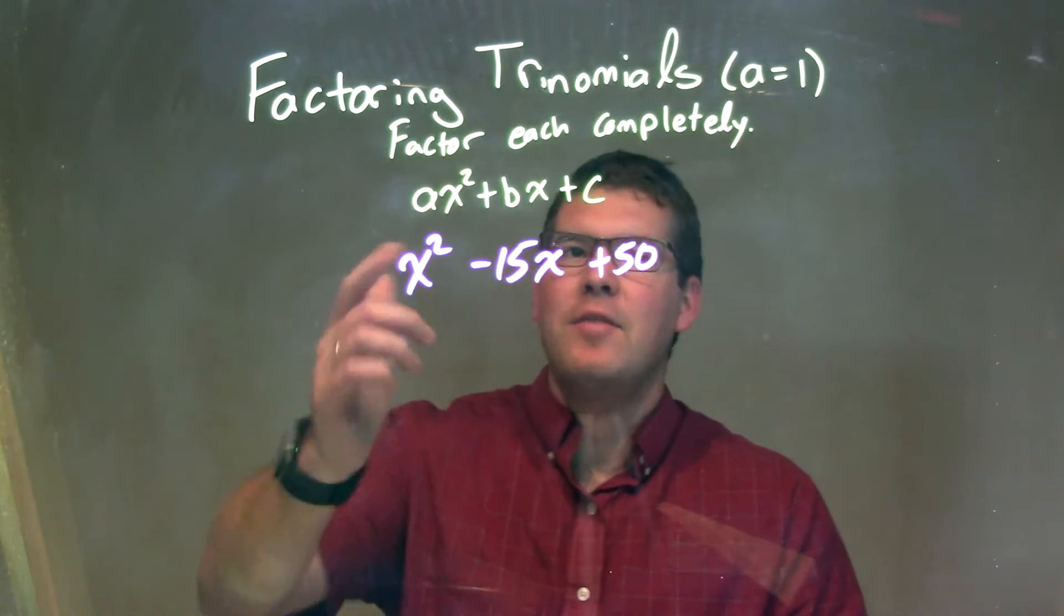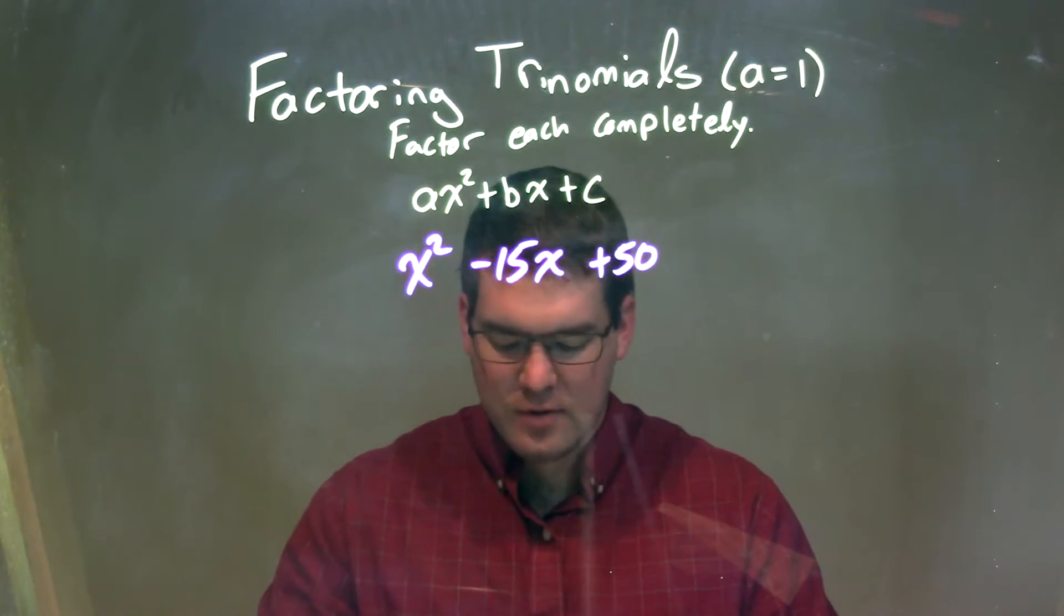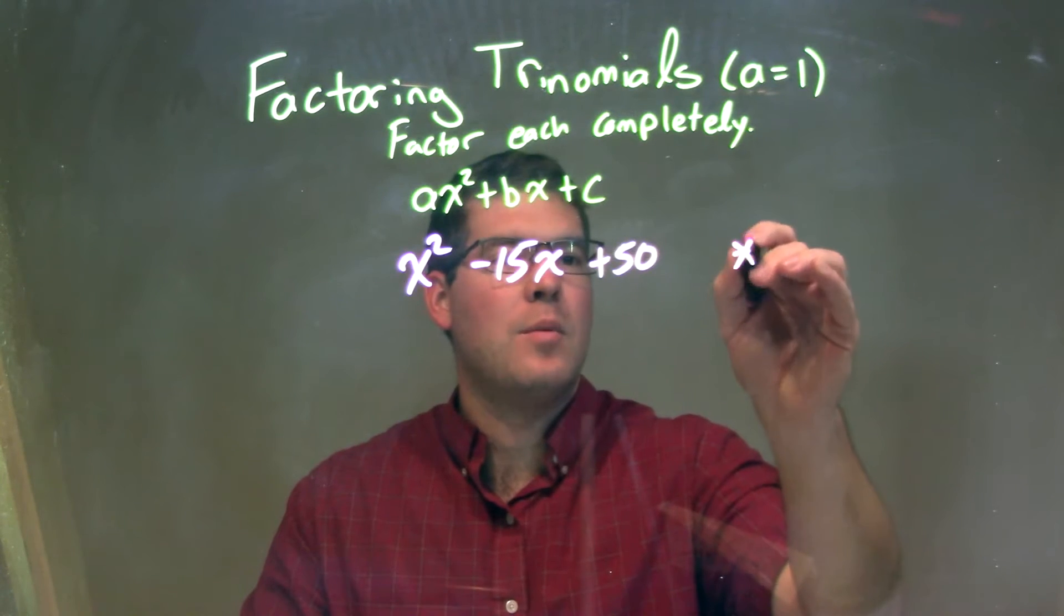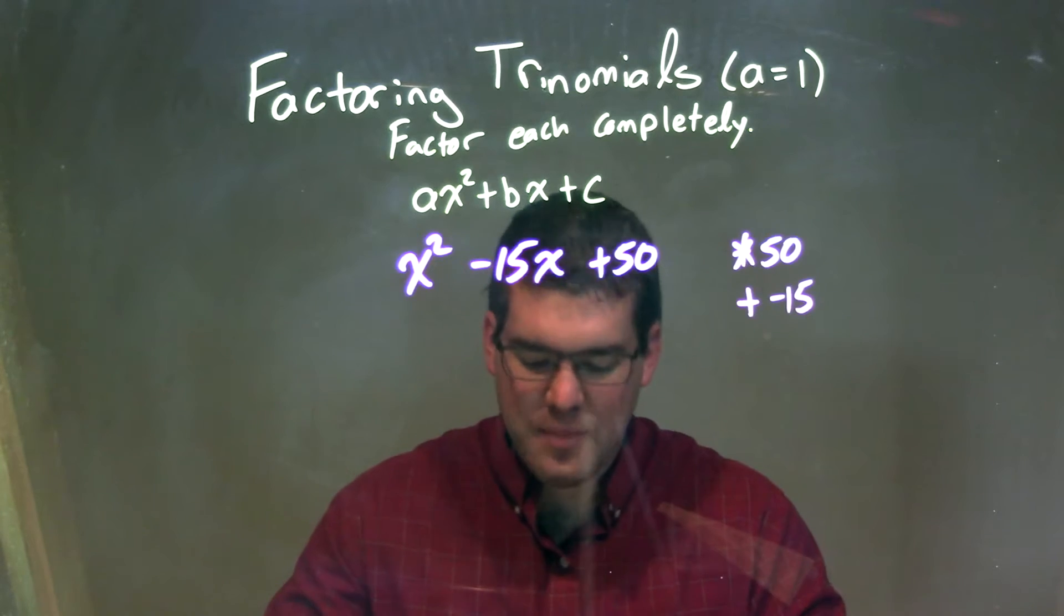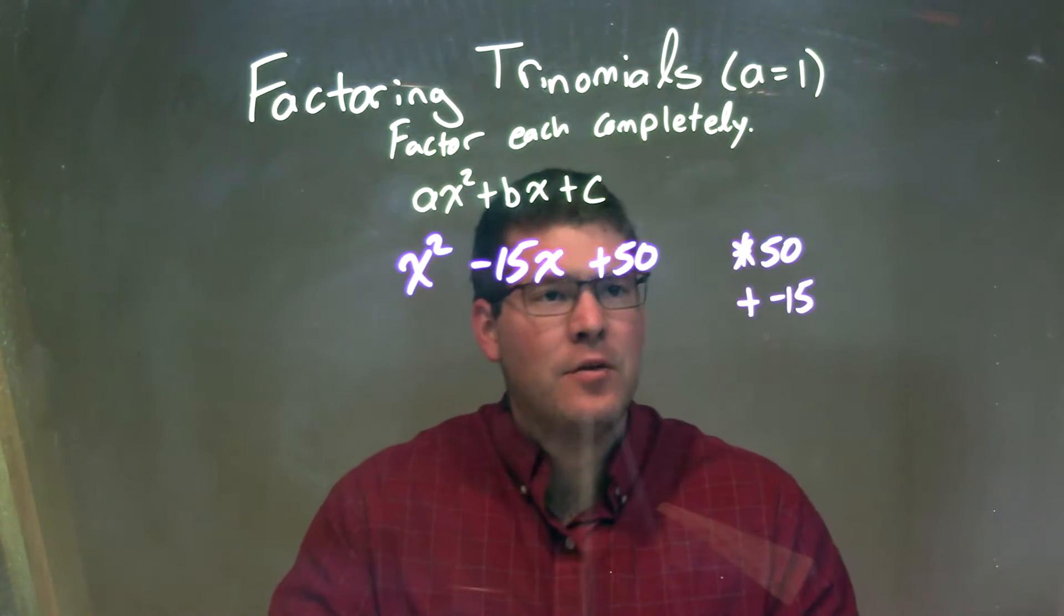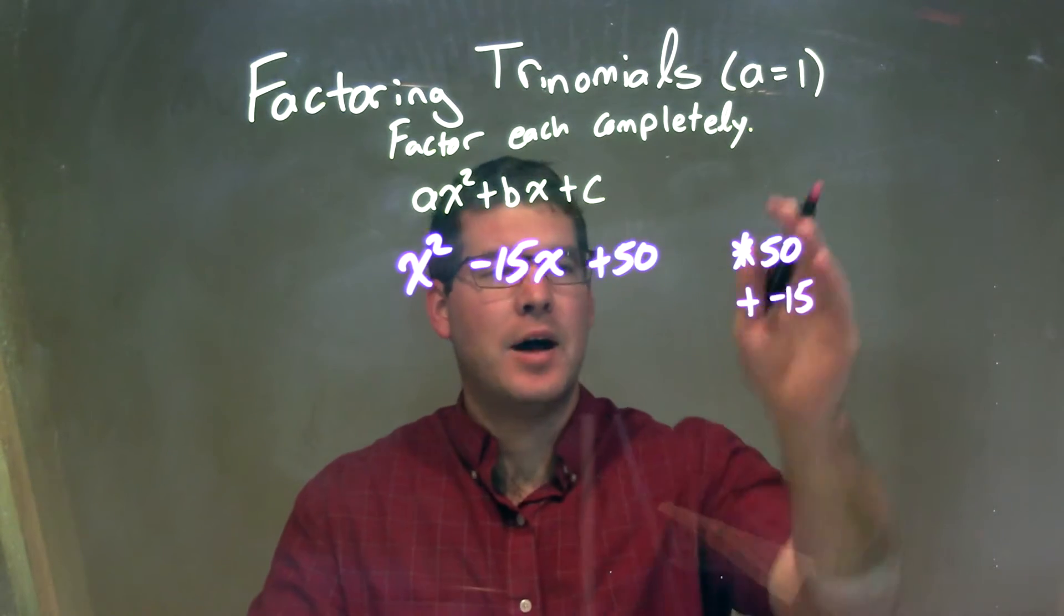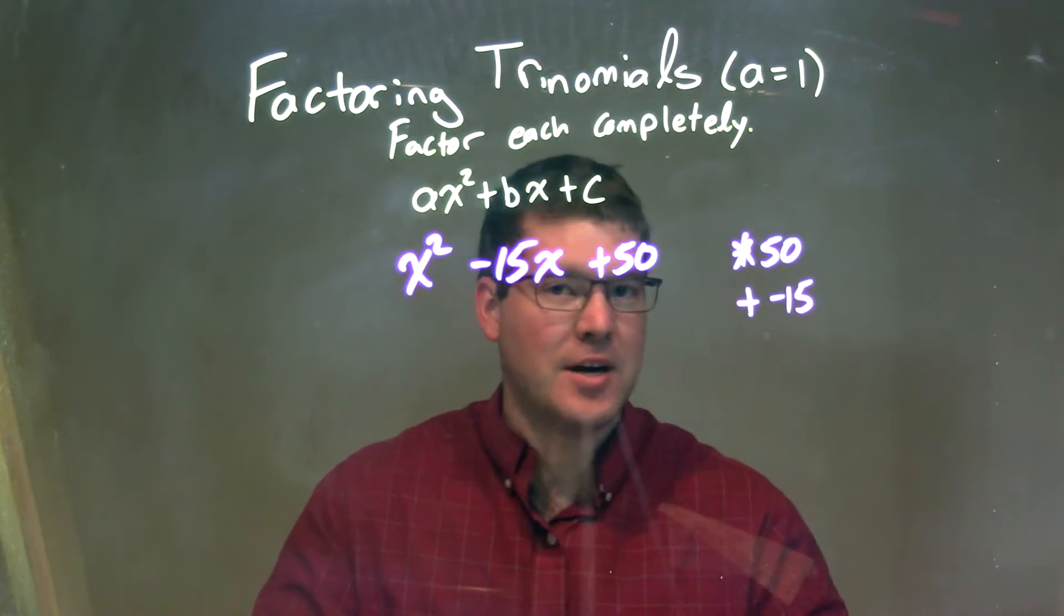Alright, so I have an a value of 1, which is great. So now I'm going to ask myself this question: What two numbers multiply to be 50 that add to be negative 15? Since they multiply to be 50 and add to be negative, multiply to be positive, add to be negative, both numbers are going to have to be negative.